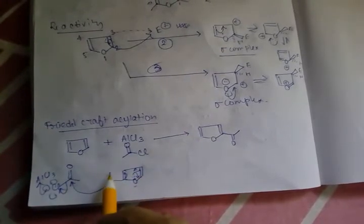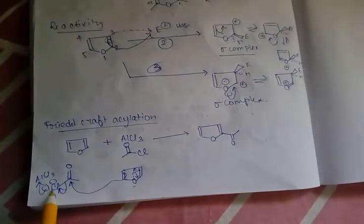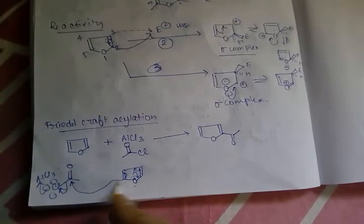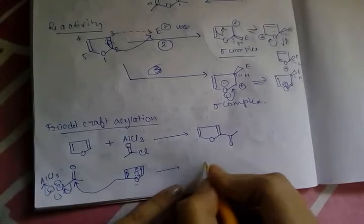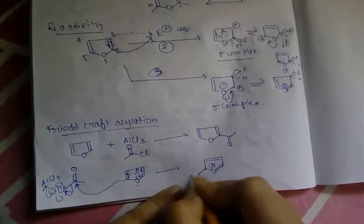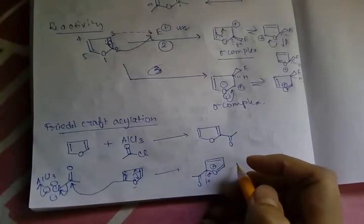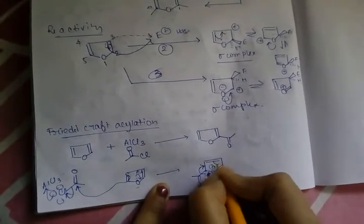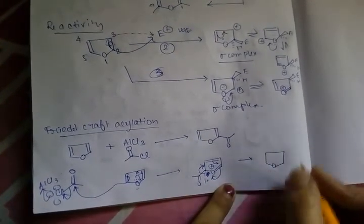Some examples: in Friedel-Crafts acylation, the reagent used is AlCl3 and an acyl chloride (RCOCl). AlCl3 acts as a Lewis acid and withdraws the chlorine group, making the carbonyl carbon electrophilic. Furan attacks via the C2 position on this carbonyl carbon and ultimately an intermediate forms. A hydrogen then breaks off as H+, the oxygen re-aromatizes, and the acylated furan product forms.